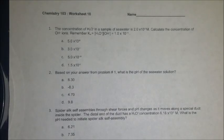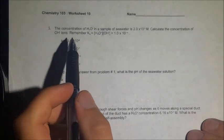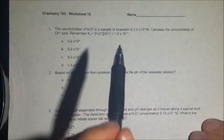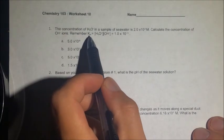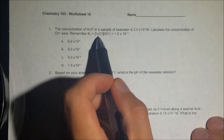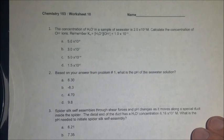Worksheet number 10 is all about pH, describing the hydronium ion concentration and the hydroxide ion concentration and how they are related. Starting off with number 1, the concentration of H₃O⁺ in a sample of seawater is 2.0 times 10 to the negative 5th molar. We need to calculate the concentration of hydroxide ions, remembering that Kw equals the concentration of hydronium times the concentration of hydroxide, which equals 1 times 10 to the negative 14th.